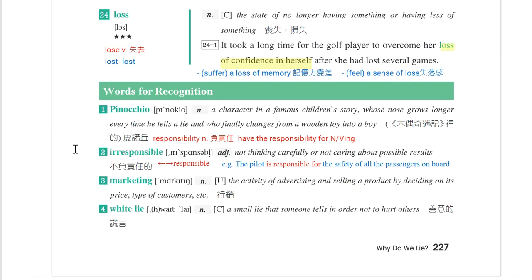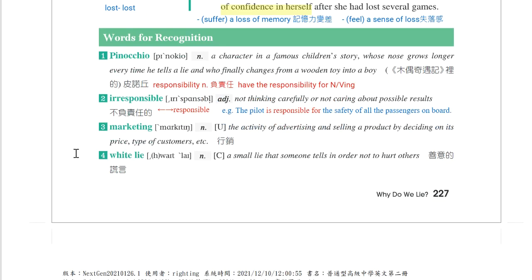接下来是words for recognition。第一个单字是irresponsible，不负责任的，相反词是responsible。R开头的字其否定词加IR，类似的如irregular，regular是有规则的，irregular是没有规则的，也是加IR。